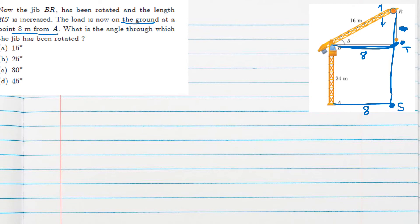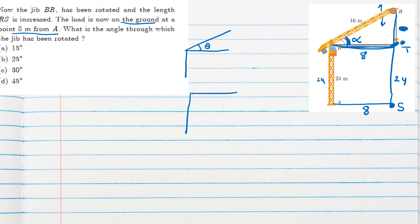Since the jib position has changed, we cannot use the same angle theta — let the new angle be alpha, which is the angle the jib makes with the horizontal. Initially the jib was at angle theta (30°), and after rotation it has moved to a new position at angle alpha. We need to find alpha first, then subtract to get the angle through which the jib has been rotated.